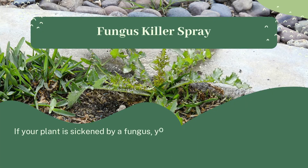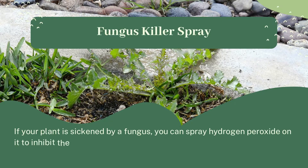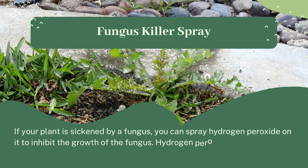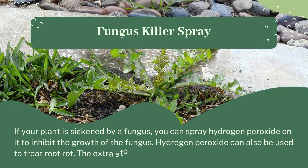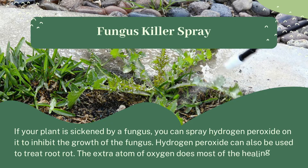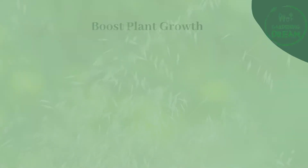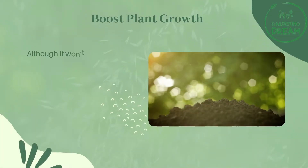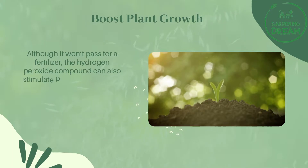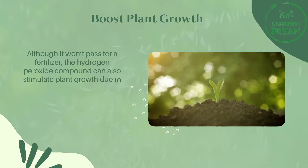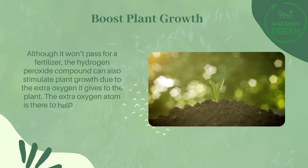As a fungus killer spray — if your plant is sickened by a fungus, you can spray hydrogen peroxide on it to inhibit the growth of the fungus. Hydrogen peroxide can also be used to treat root rot, where the extra atom of oxygen does most of the healing. To boost plant growth — although it won't pass for a fertilizer, hydrogen peroxide can also stimulate plant growth due to the extra oxygen it gives to the plant.